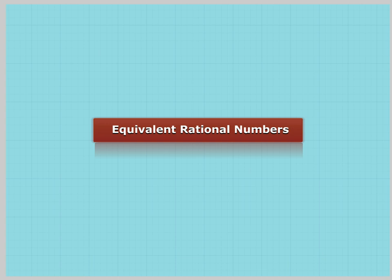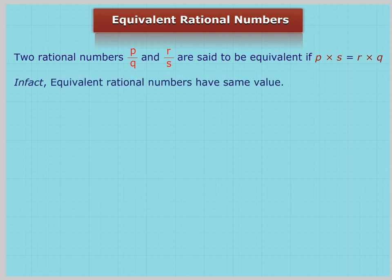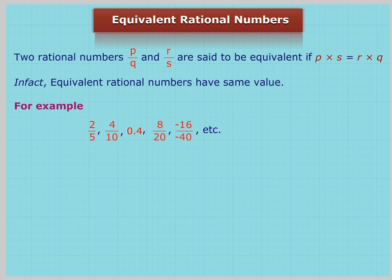Equivalent rational numbers. Two rational numbers P/Q and R/S are said to be equivalent if P multiplied by S equals R multiplied by Q. In fact, equivalent rational numbers have the same value. For example, 2/5, 4/10, 0.4, 8/20, -16/-40, etc. are all equivalent rational numbers.